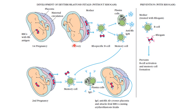After the fetal RBCs reach the mother's circulation during delivery, they activate an immune response in the mother's body. These are Rh-specific B cells, which are responsible for the production of antibodies to destroy the fetal RBCs. After some time, these B cells become plasma cells — special B cells that have the ability to secrete antibodies — and memory cells, which memorize which type of antigen was present in the blood.